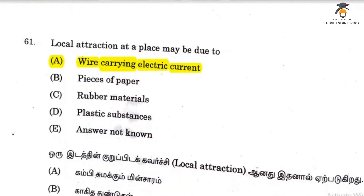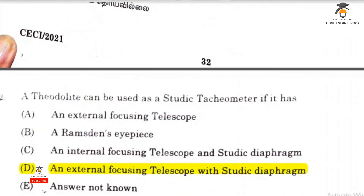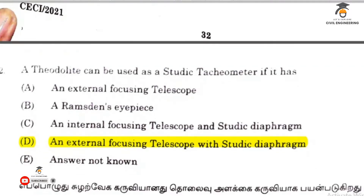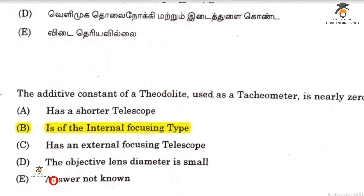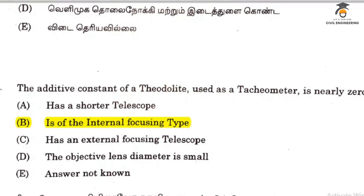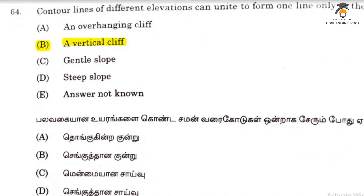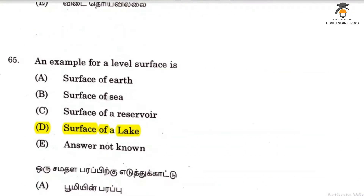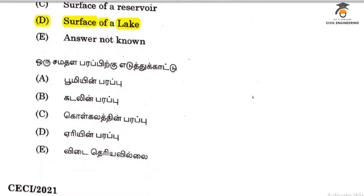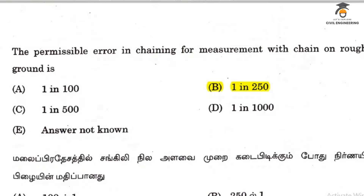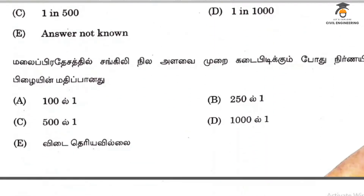Local attraction in surveying may be due to a wire carrying electrical current. A theodolite can be used with a stadia tachymeter if it has an external focusing telescope with a stadia diaphragm. The additive constant is zero if it is an internal focusing telescope. Contour lines intersect at a vertical cliff. An example of a level surface is the surface of a lake. Tape correction for a pull is based on option. The permissible error in chaining is 1 in 250 for rough surveys.